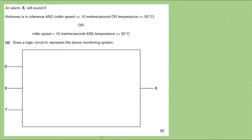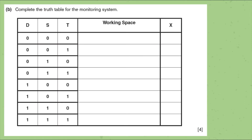The question states: alarm X will sound if thickness is in tolerance AND roller speed is not equal to 10 m/s, OR temperature is greater than or equal to 50°C, OR roller speed equals 10 m/s AND temperature is greater than or equal to 50°C. The tasks are to draw a logic circuit representing the monitoring system and complete the truth table. Let me explain how to do these types of logic gate questions step by step.